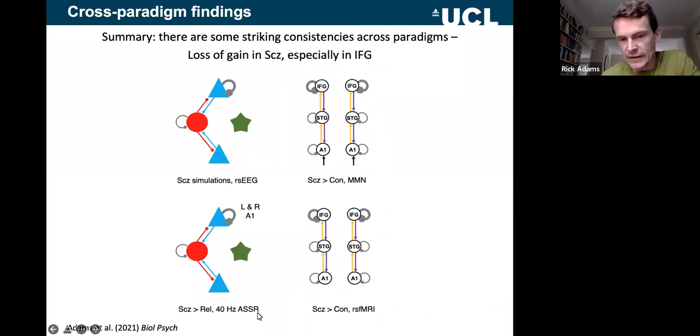Then the auditory steady state response task. Again, this time, the difference between patients and the relatives, which is the most marked group difference, showed again, a loss of excitability of pyramidal cells in bilateral primary auditory cortex. And then finally, in the resting state fMRI analysis, we saw an apparent loss of excitability in inferior frontal gyrus, the exact same pattern that we'd seen in this very different mismatch negativity paradigm. So this did seem to indicate that the kind of fundamental difference between groups is a loss of excitability of pyramidal cells, in particular in the disorder.